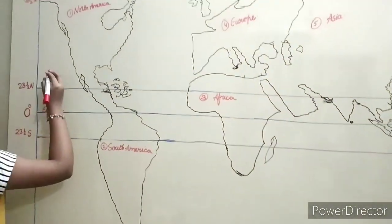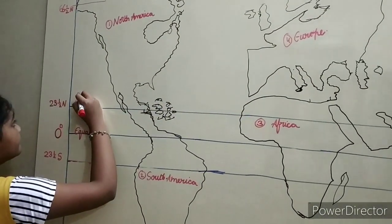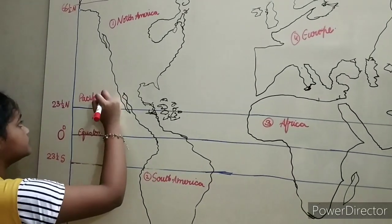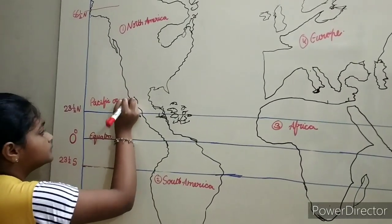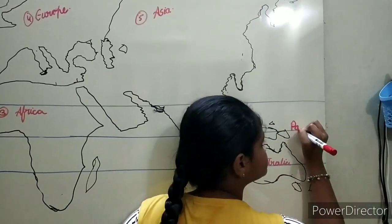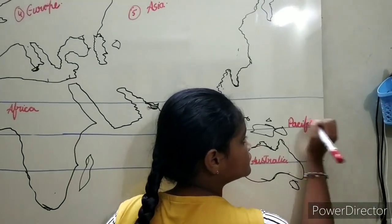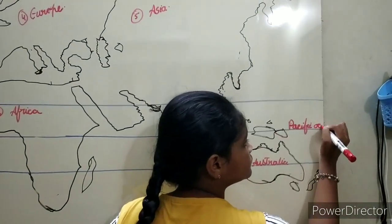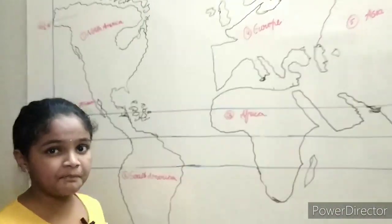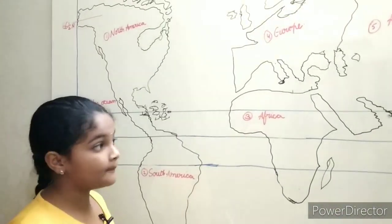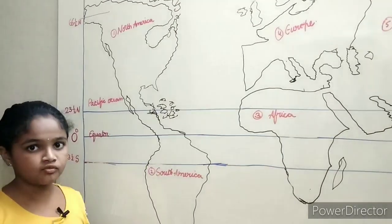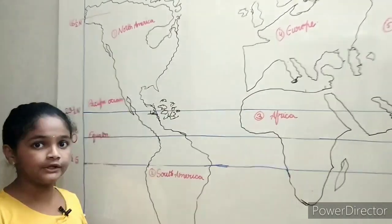Now, oceans. Here this part and this part is the Pacific Ocean, and here also on both sides — this is because our Earth is in spherical shape and they join on Earth, but on this flat map it is divided into two parts.